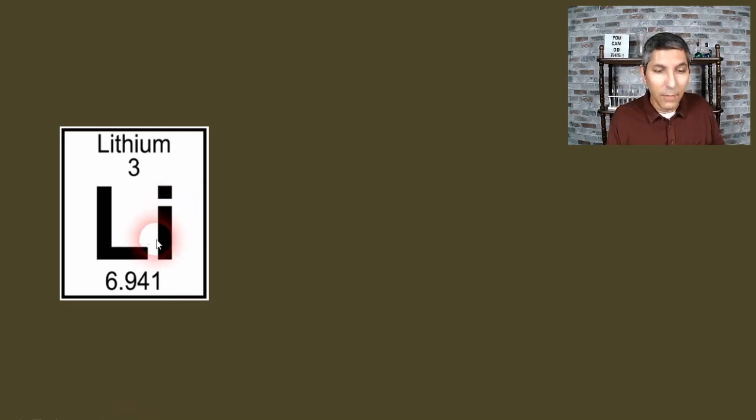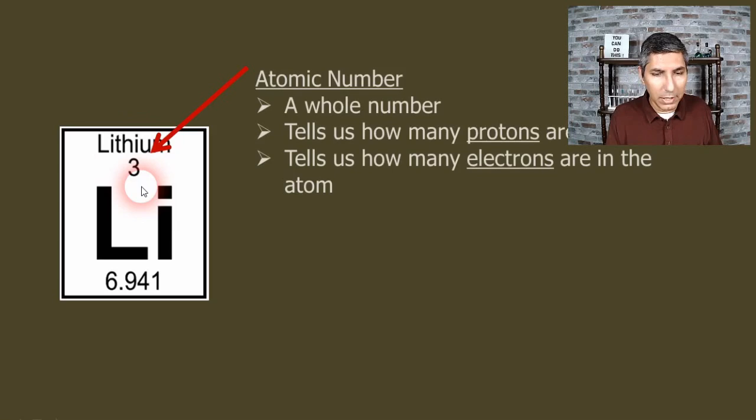The first thing that you might notice is the symbol, the Li. That's pretty much the same in all languages. So no matter what language you use, very often even if it's a language that does not use our roman alphabet, our English alphabet, they'll still use the same symbol to represent that element. So we have the symbol, we have the name. The names are different in each language, but we also have this number three right here. That number three is something called the atomic number. Now the atomic number is a whole number. It gives us a couple important bits of information about the atom. First of all, it tells us how many protons are in that atom. It also tells us how many electrons are found in that atom.